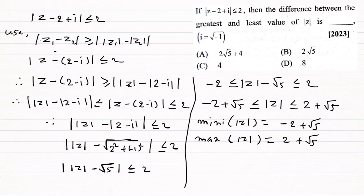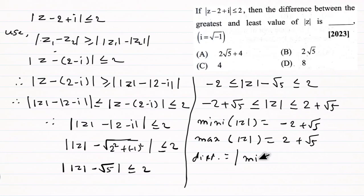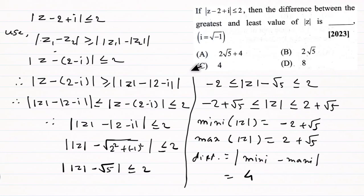The difference between the greatest and least values is the maximum minus the minimum: (root 5 plus 2) minus (root 5 minus 2). Root 5 cancels out, giving us the answer: 4.